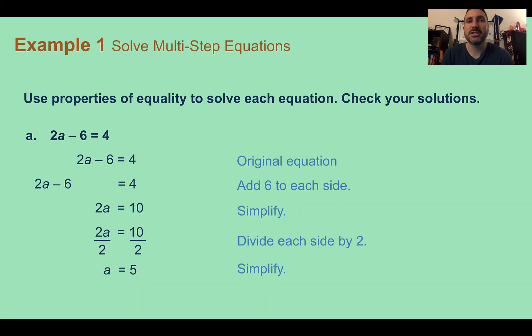Example one, solve multistep equations. Use properties of equality to solve each equation. Check your solutions. Part A, we have 2A minus 6 equals 4. Before I even begin, I can see I have two operations. I have subtraction there, and there's a hidden multiplication between the 2 and the A. I'm thinking somewhere I'm going to need to add, somewhere I'm going to need to divide, since those are the opposite operations of what I saw.